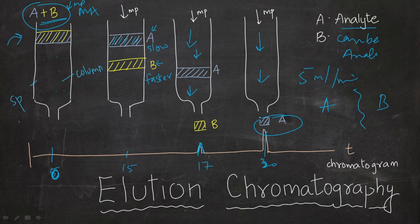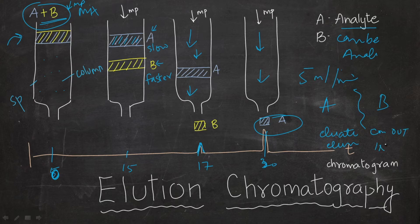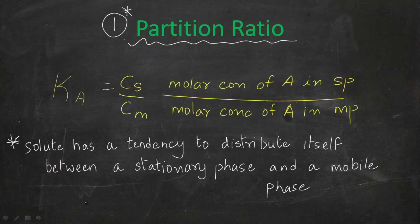This is what elution chromatography means. There are two terms: eluent and eluate. Eluate is what comes out, and eluent is what goes in. Now there are some mathematical terms by which we can measure the efficiency of any chromatographic separation — how efficient it is, how well it is separating, how fast it is working.